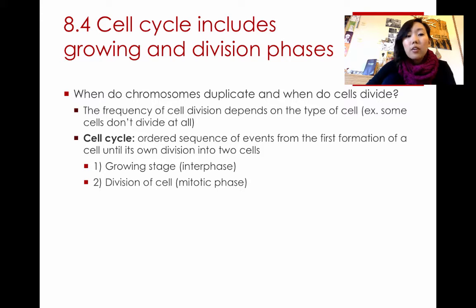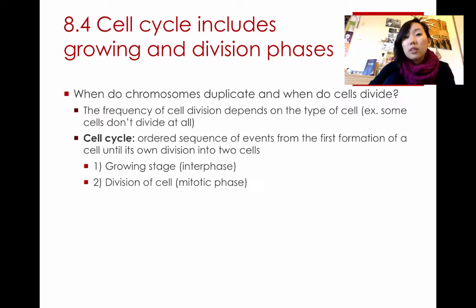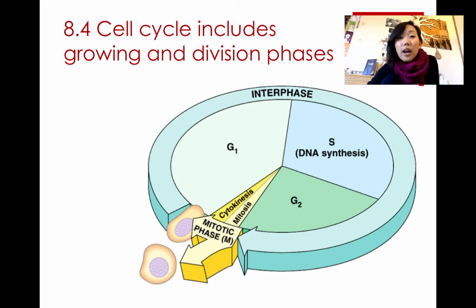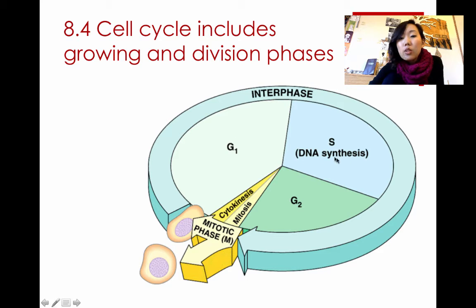There are two major parts of the cell cycle. The first is the growing stage — the longest part of the cell's life — called interphase, when the cell keeps getting bigger and duplicates all its organelles and DNA. The second part is called the mitotic phase, when the cell ultimately divides. As shown in the diagram, interphase is the majority of the cell's life, while the mitotic phase is very short.